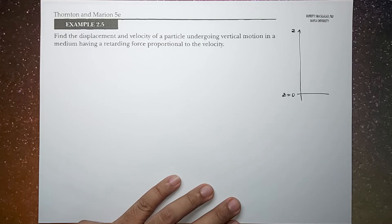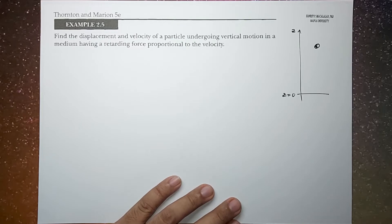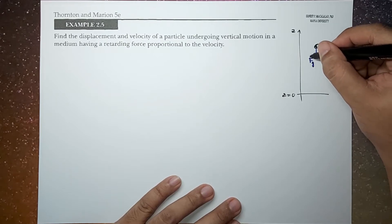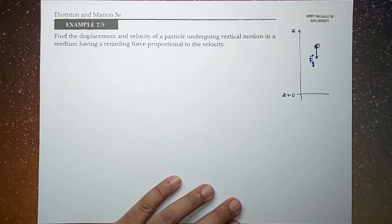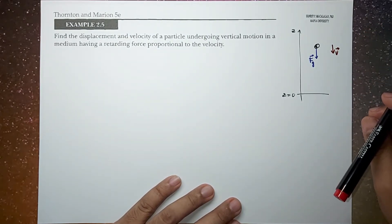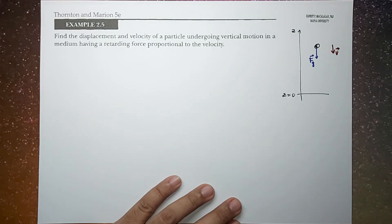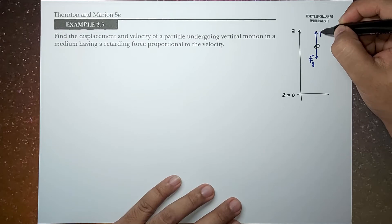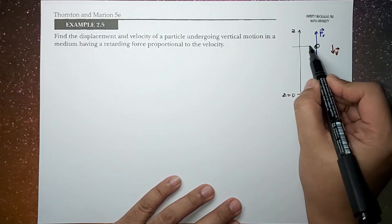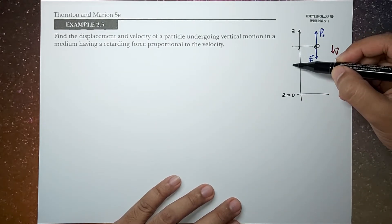Now if we're going to consider a particle under the influence of a constant gravitational field, this object will experience two forces. Of course, it will experience the gravitational force, which is always downward. If this object is moving downward, so that means the velocity is downward, the retarding force will be in the upward direction. We set the initial height of the object to be h.